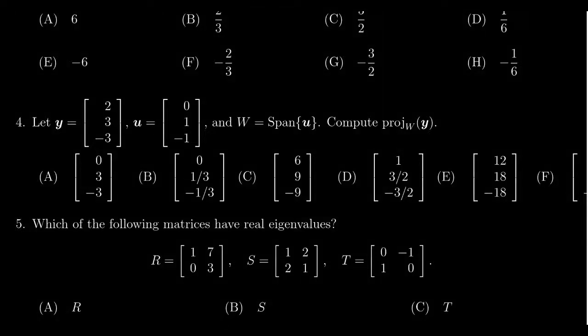In this video, we're going to provide the solution to question number four from exam three for Math 2270, in which case we're given a vector y which has the coordinates 2, 3, and negative 3.